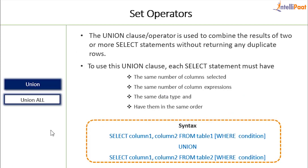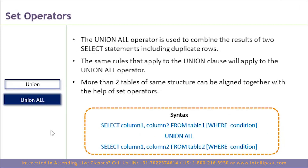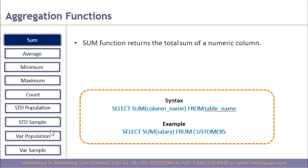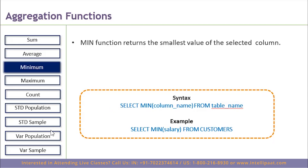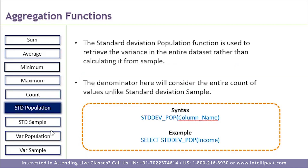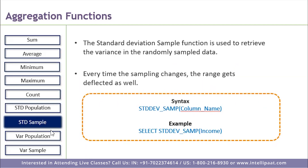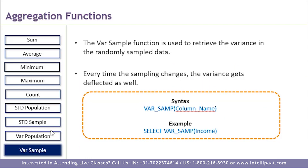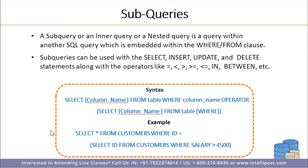In set operators we are going to see what UNION and UNION ALL are. We are also going to see an extensive list of aggregation functions, which are very vital in real-time applications: sum, average, minimum, maximum, count, standard deviation (population and sample), and variance (population and sample). For those aspiring to become a data scientist or data analyst, it is very important to know standard deviation and variance as well, and we are going to cover that.